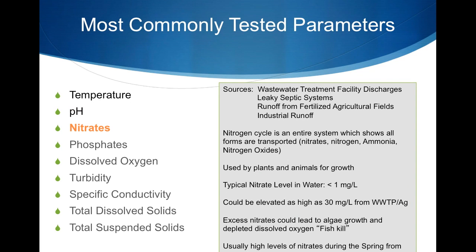Nitrates are a fertilizer used by plants for growth. Typically, nitrates are below 1 mg per liter but can reach levels as high as 30 mg per liter. Excess nitrates are potentially harmful to humans and may lead to fish kills. Nitrate levels peak in early spring due to snowmelt and runoff, and can come from wastewater treatment facilities, leaky septic systems, or runoff from agricultural practices or industry.